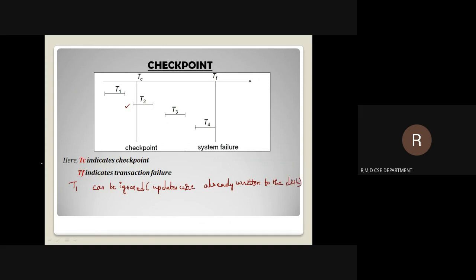What about T2? We have to check whether the operations need to be proceeded — that is, written to the disk — or whether they need to be undone.